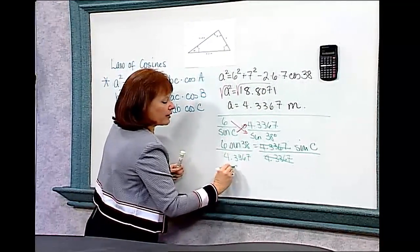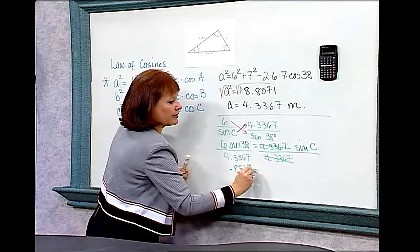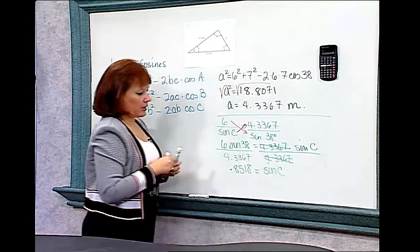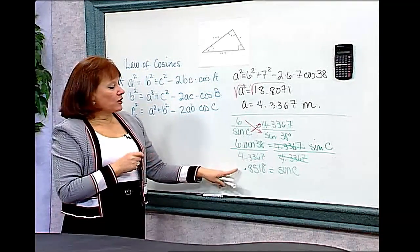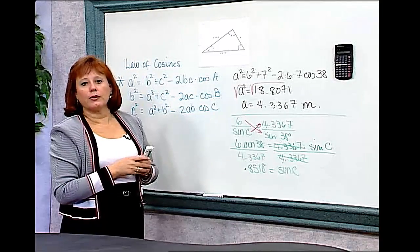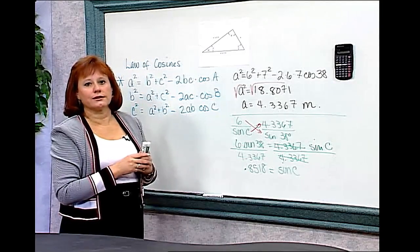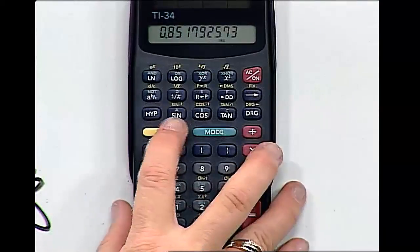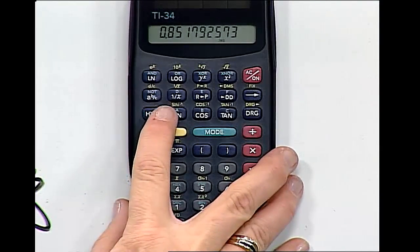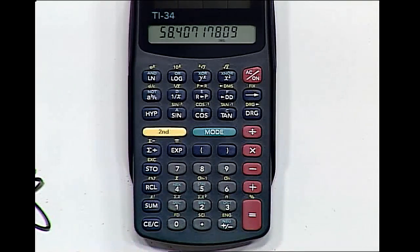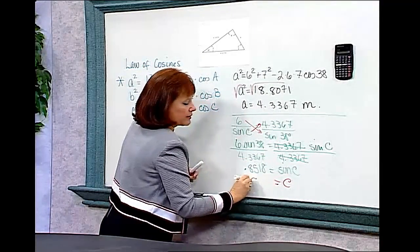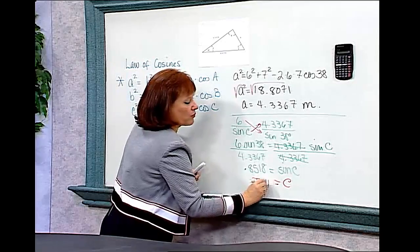So I have 0.8518 equal to the sine of C. I don't want the sine of C — I want angle C itself. Since I know its sine, I can find the angle by accessing the inverse sine (second function sine) key. I hit second function and sine, and it tells me this is a 58.41 degree angle. So angle C is 58.41 degrees.